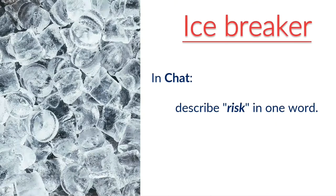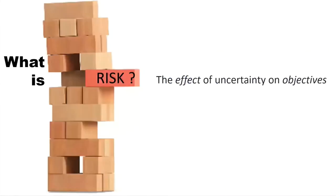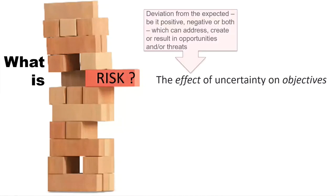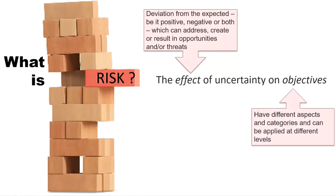So, what is risk? The Australian Risk Management Standard defines risk as any effect of uncertainty on objectives — with 'effect' being the deviation from the expected, which could be positive, negative, or both, and can address, create, or result in opportunities and/or threats — while objectives have different aspects and categories and can be applied at different levels.